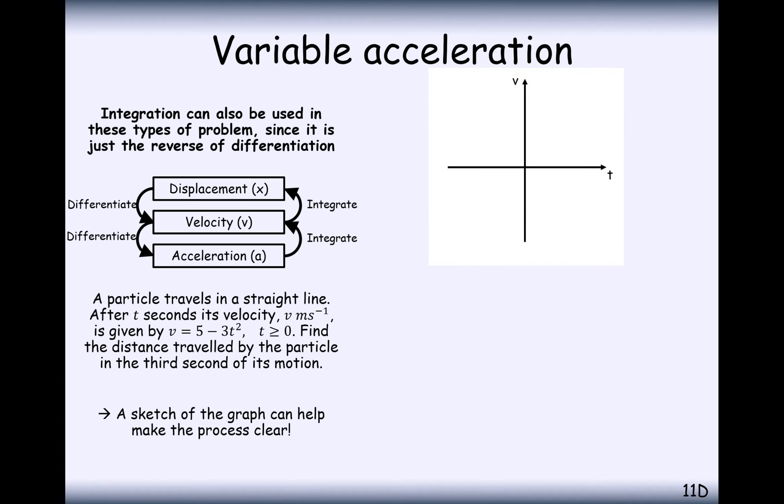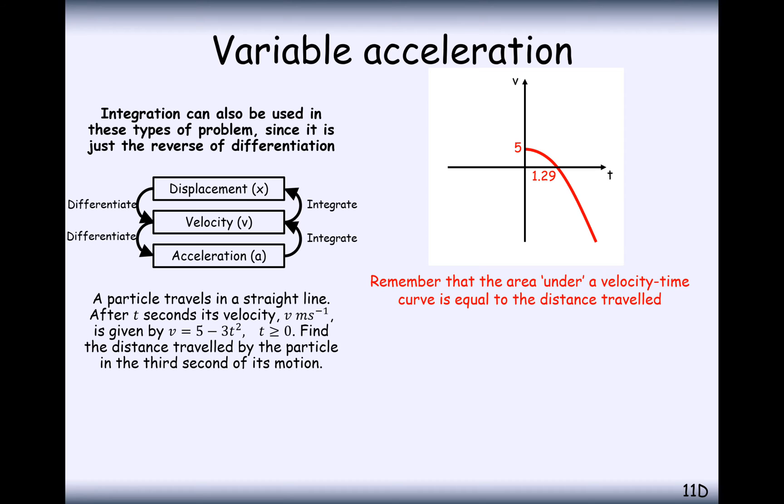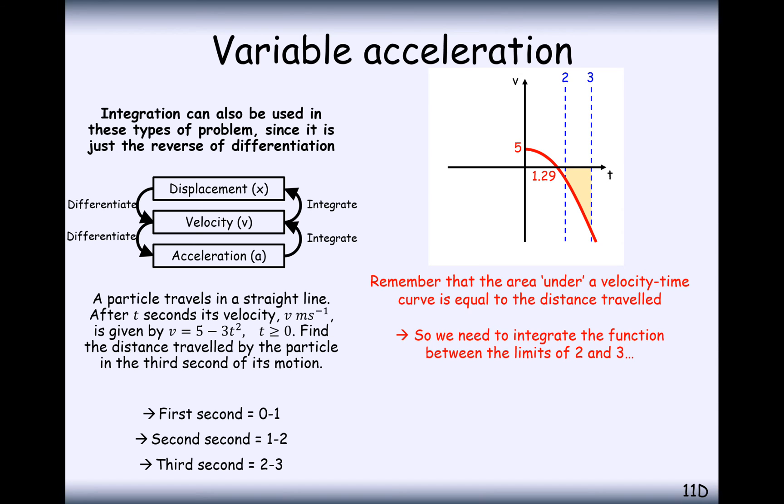Let's sketch a graph. We're going to have a negative quadratic, y intercept at 5. We'll find the roots on the axis at 1.29. t is greater than 0, so we don't need it going backwards. Remember, the area under the velocity time curve is equal to the distance traveled. The first second is going to be from 0 to 1. Second second is going to be from 1 to 2. And the third second is going to be from 2 to 3. So what we want to find is the integration in between the second and the third second, this area here.